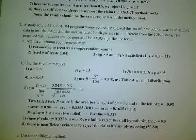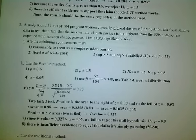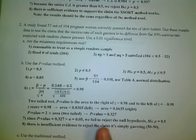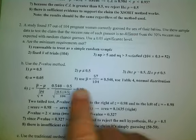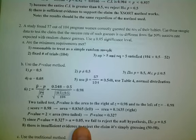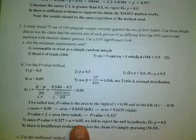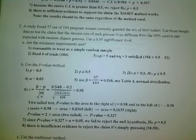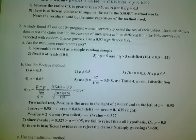A Z score of 0.98 gives an area of 0.8365 to the left; subtracting from one gives 0.1635. Since this is a two-tailed test we double that area, giving a p-value of 0.327. Since 0.327 is much bigger than alpha 0.05 - the p-value extends closer to the center than alpha - we fail to reject the null hypothesis. There is insufficient evidence to reject the claim that it's simply guessing.